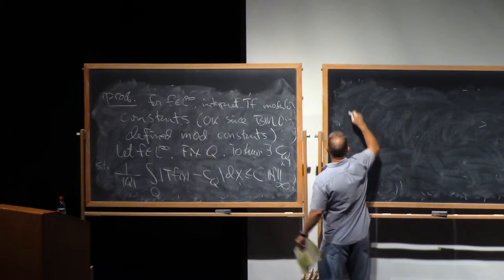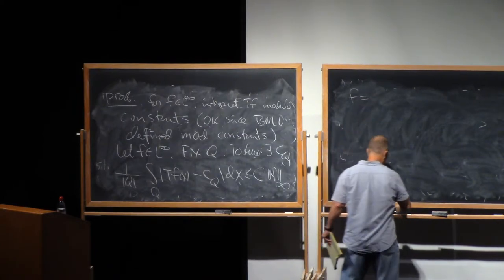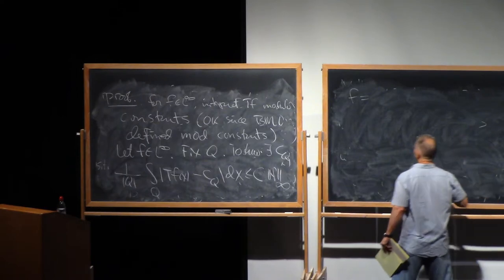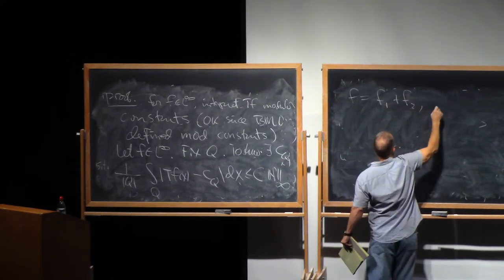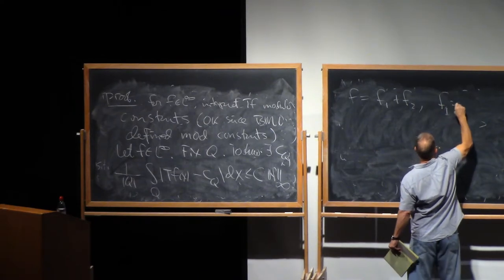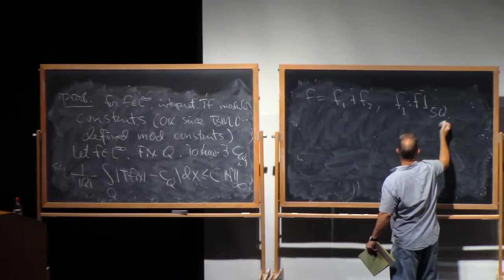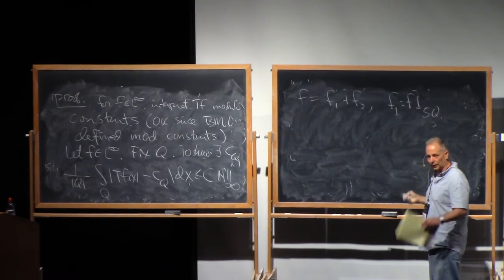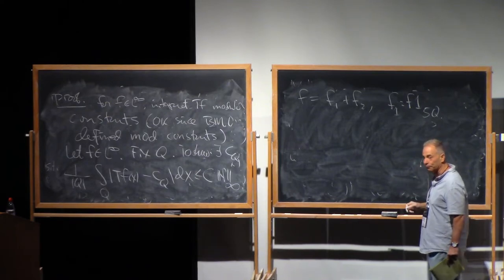So then, we're gonna split F into two pieces. F is gonna be F1 plus F2, where F1 is F times the indicator of, let's say, five times Q. That's the concentric dilate. And so F2 is obviously living on the complement of 5Q.